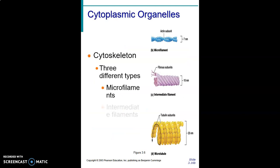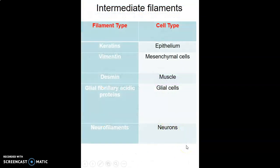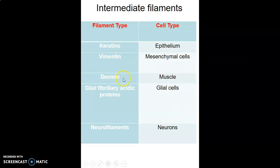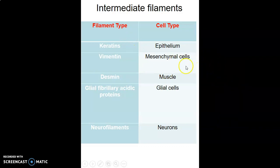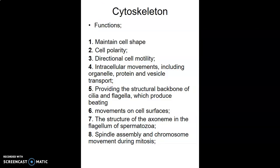The cytoskeleton has three types: microfilaments, intermediate filaments, and microtubules. The types of intermediate filaments are: epithelium contains keratin; mesenchymal cells contain vimentin; muscles contain desmin; glial cells contain gliofibrillary acidic protein; and neurons contain neurofilaments. This is important to remember for matching questions.